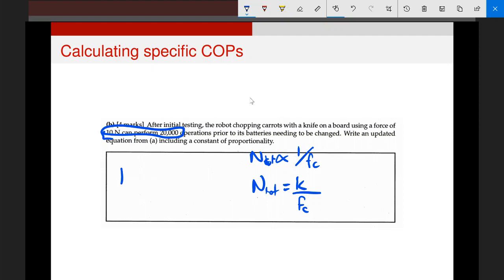So if we rearrange this, I can write that k, our constant of proportionality, is simply N_tot times F_c, which is going to be 10 newtons times 20,000 operations, which is going to be 200,000. So I can rewrite this equation here, N_tot equals 200,000 divided by F_c.